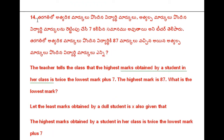14th problem. The teacher says: in the class, the student with the highest marks — if we double the marks of the lowest-scoring student and add 7, we get the highest marks. We need to find the least mark in the class. The highest marks in the class is 87.